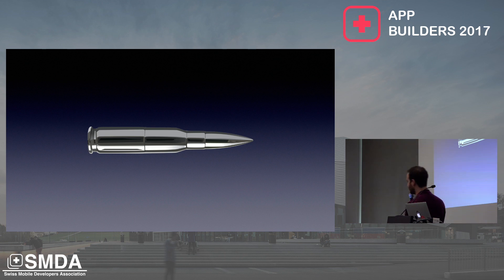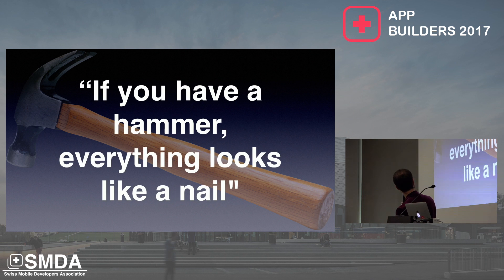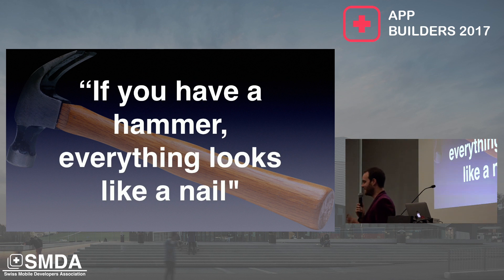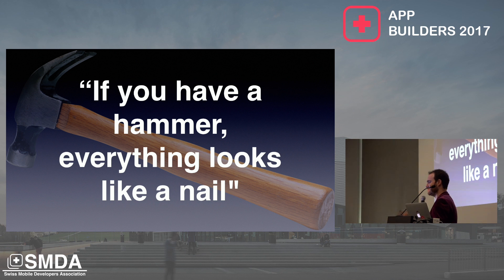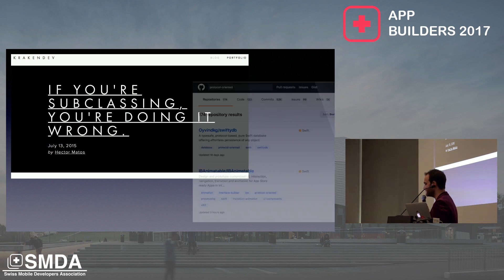So why is it not a silver bullet? I think it comes down to: if you have a hammer, everything looks like a nail. And I think it's especially true if it's a hammer you love using. As a community, we kind of fell in love with this idea a bit too much. You'll see blog posts saying if you're subclassing, you're doing it wrong. And if you search GitHub, there are 180 Swift frameworks that sell themselves as protocol-oriented.